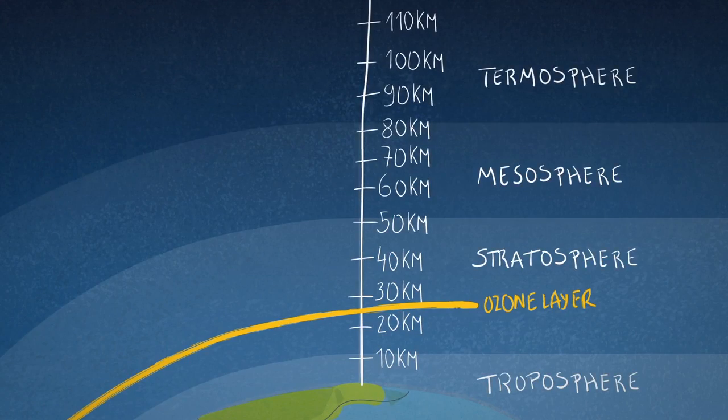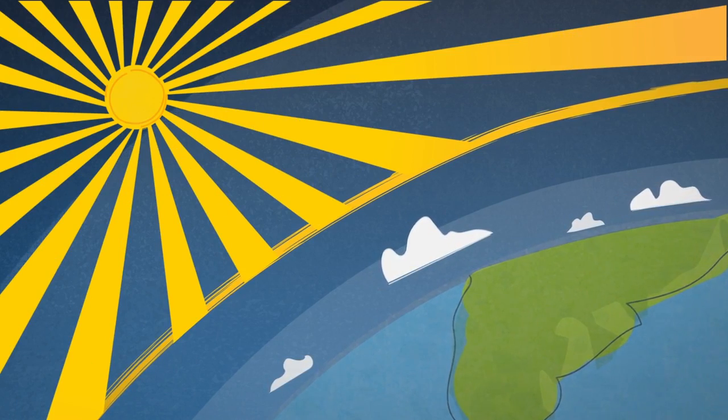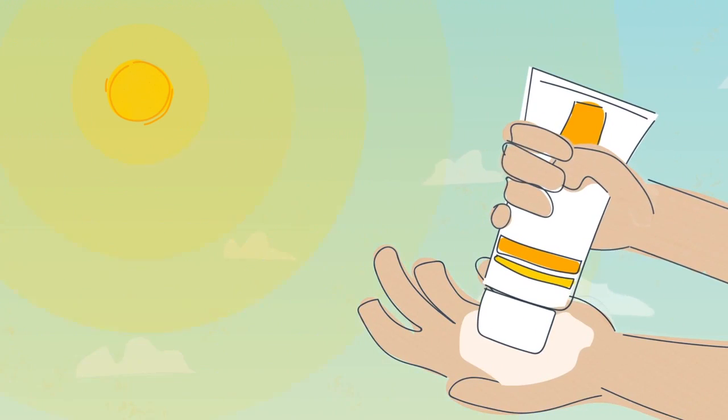Let's recap. The ozone layer lies in the stratosphere, where it acts as a shield to protect us against harmful UV radiation, which, in excessive doses, can increase your risk for a number of diseases, including skin cancer.